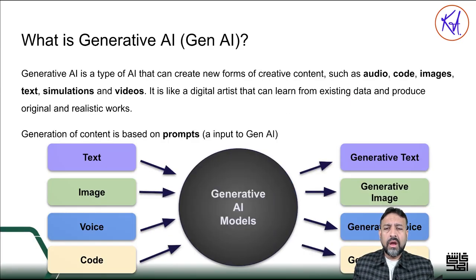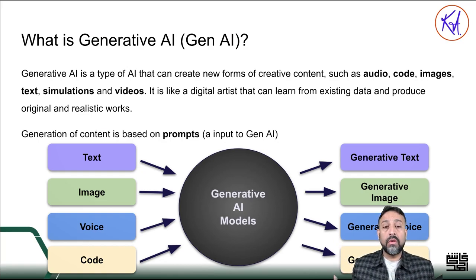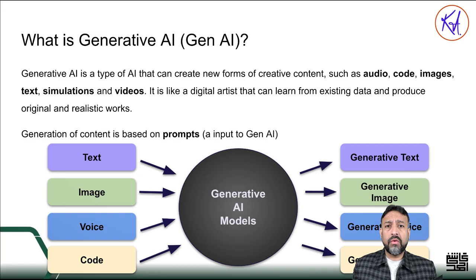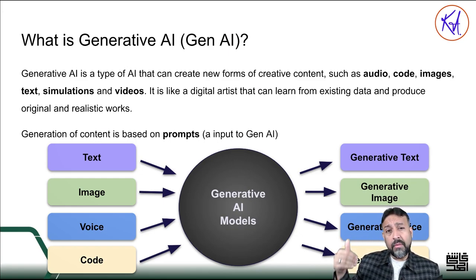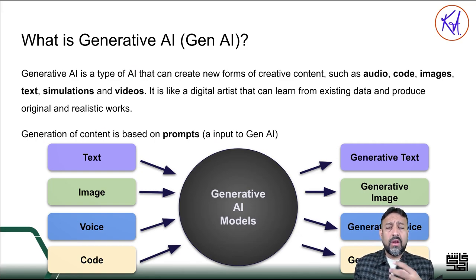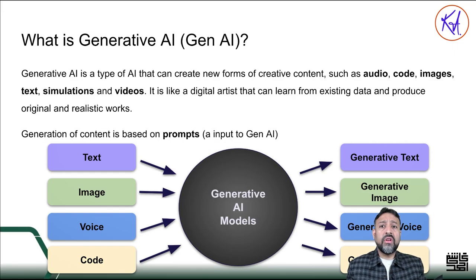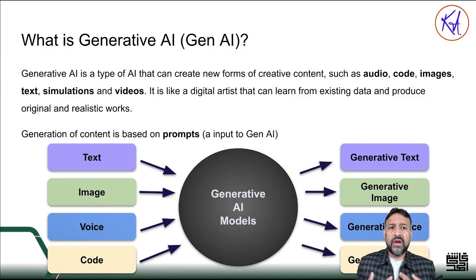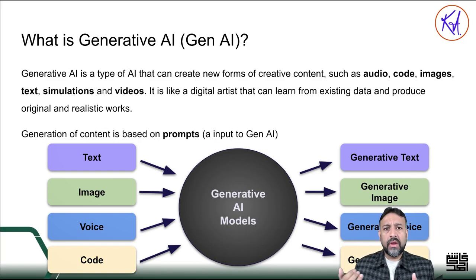Let's dig a little deeper into generative AI. Generative AI is like a digital artist that can learn from your existing data, sources, and environment, and produce original and realistic work. For example, it can write a new song, compose new music, or draw a picture based on the input you provide. You can see that on the left side you provide input — which we call a prompt. It could be a word, phrase, sentence, image, voice, or code. It goes into the AI algorithm black box — where all the computations happen — and it generates new original text, image, voice, or code. In simplistic terms, you provide input prompts and it produces unique output.